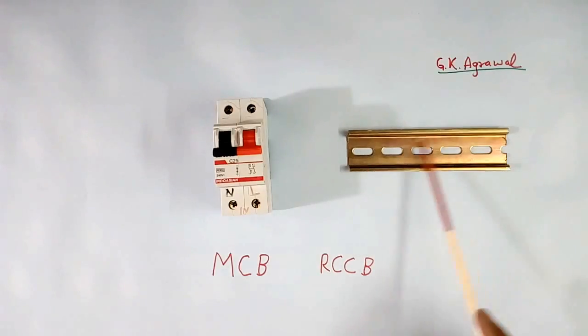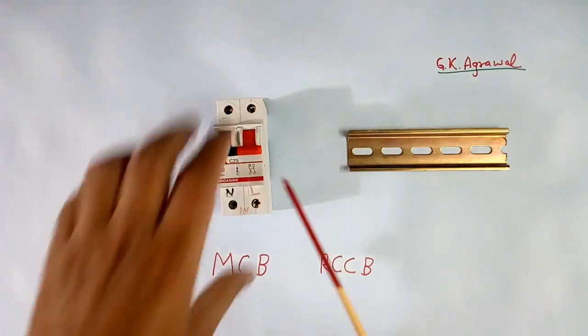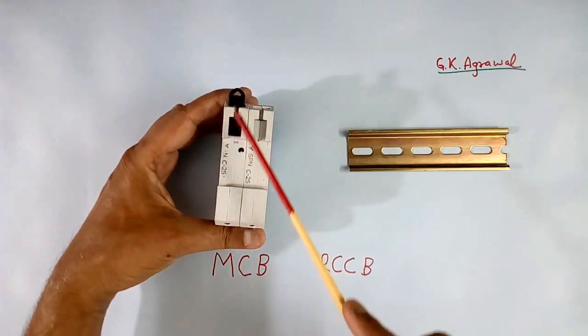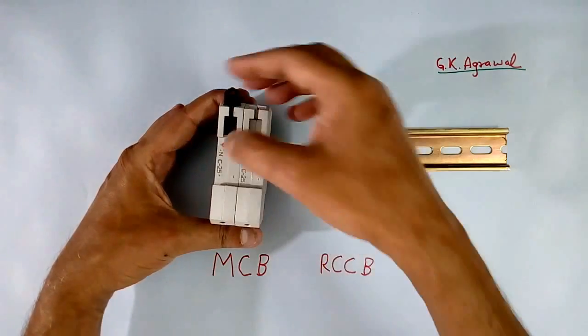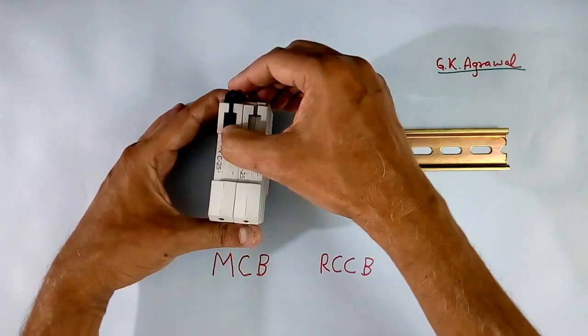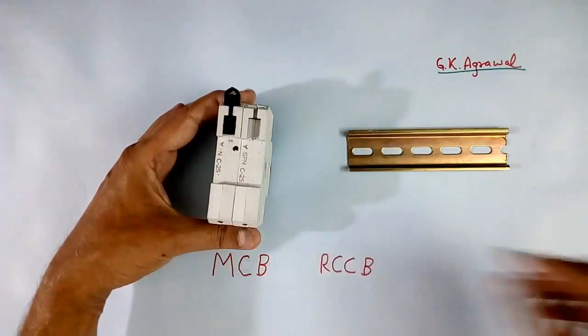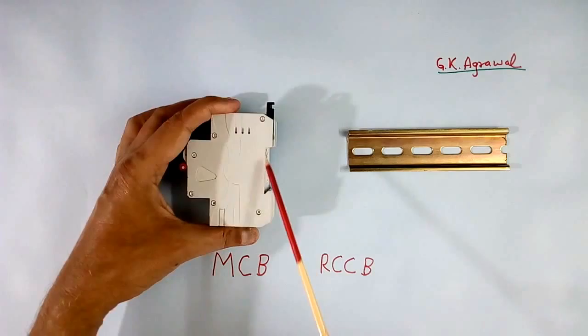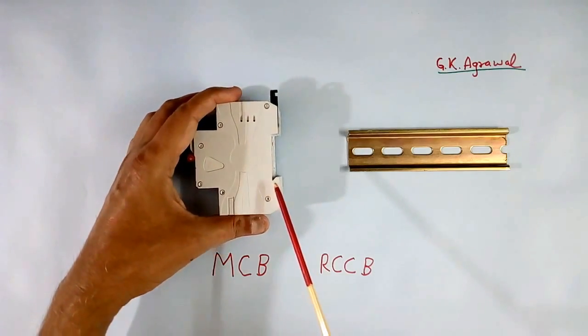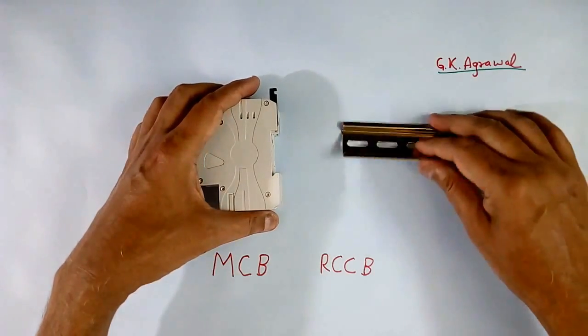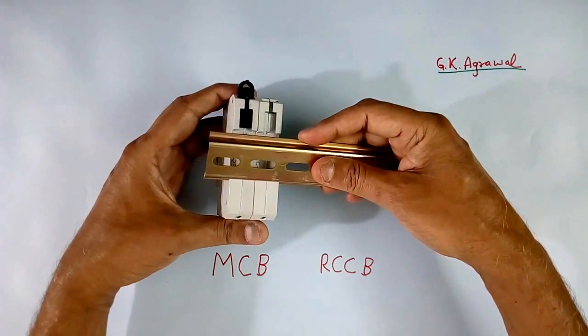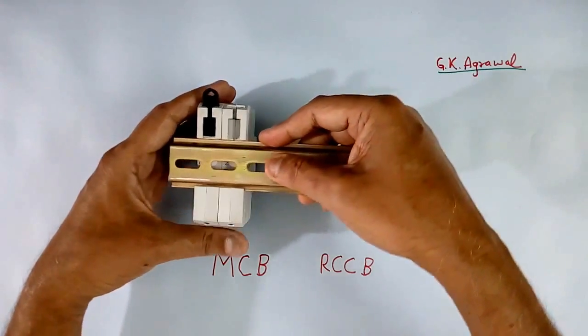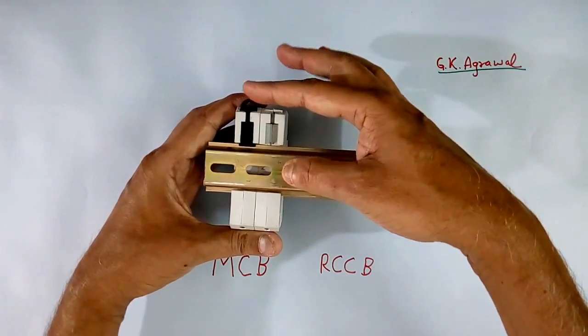This is fixing channel for this MCB. Here you see, MCB has one sliding plastic button. This is locking arrangement. You see. It moves this side and this side. And this has a cut out. Here 90 degree, here little deep. Where it is deep, that side, first we put channel here. Then we put channel here. Then press this like this.